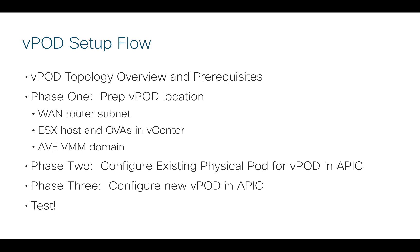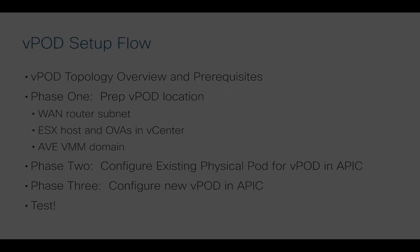We'll go over some prerequisites and some design considerations. Then we'll talk about what you need to do to prep the vpod location — you're going to need some subnets, have some OVAs ready to go in vCenter, and create a VMM domain in ACI ahead of time. Phase 2 is preparing the physical pod to participate in a vpod environment. Phase 3 is finalizing the configuration of the vpod in APIC itself, and then we'll finish off by testing.